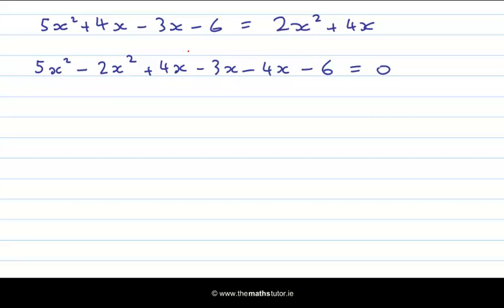Now plus 4x and minus 4x cancel out. And by adding up the like terms, we get 3x squared minus 3x minus 6 equal to 0. Now remember, the question asked us to solve this. So I am looking for a value of x which satisfies this equation. I can divide both sides by 3, and I still get 0 on the right hand side, because 0 divided by 3 is 0.